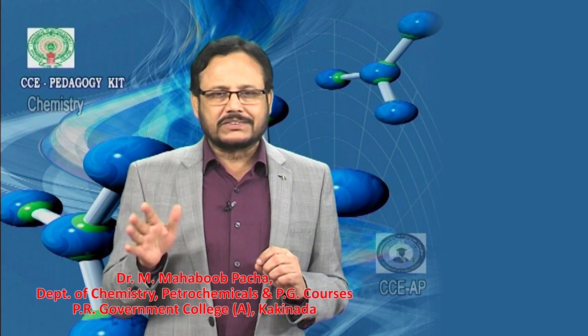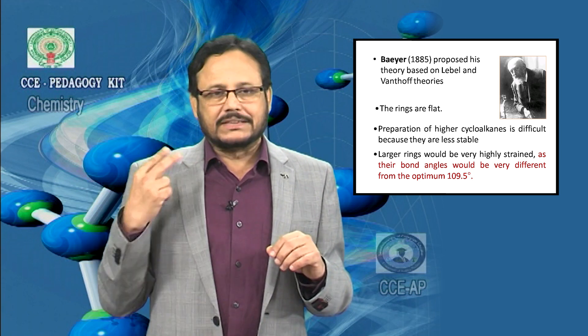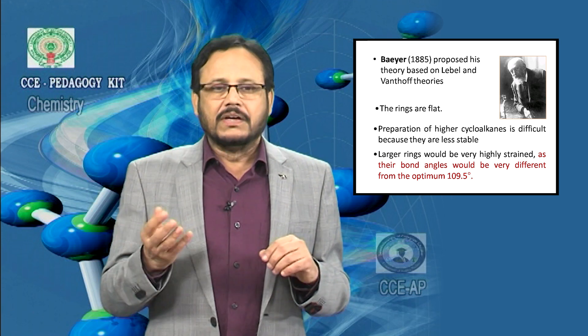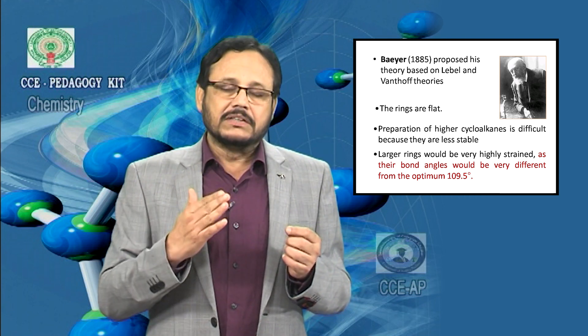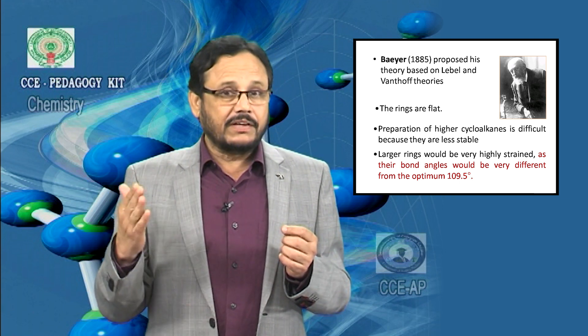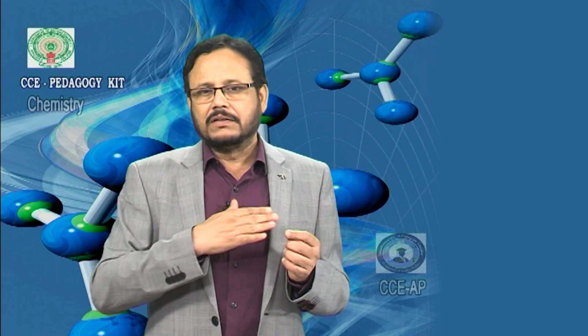This Baeyer strain theory is based on the experiments and theories proposed by LeBel and van't Hoff. Baeyer proposed certain very important postulates regarding the structures or conformations of cycloalkanes, for which he was awarded a Nobel Prize. His main postulates are: the cyclic compounds, the cycloalkanes, are flat and planar. His second postulate is that it is very difficult to synthesize higher cycloalkanes as they have some angle strain. I am going to explain these postulates in detail using a few models.